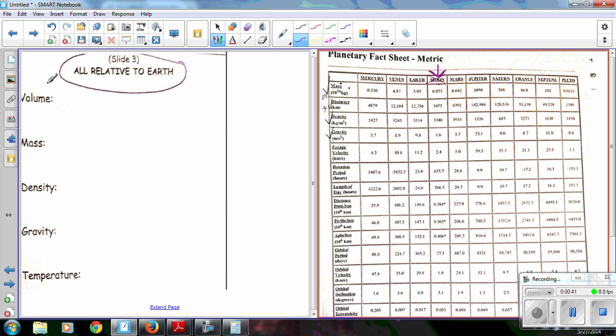And let's see, so we're going to go through volume, mass, density, gravity, and temperature. I'm actually going to come back to volume last. It is the one that requires the most calculations. So I'm going to do that one last.